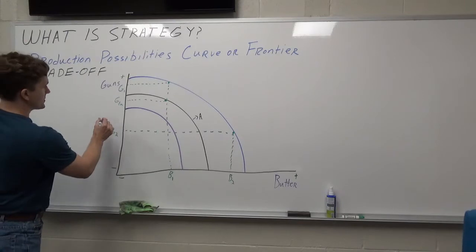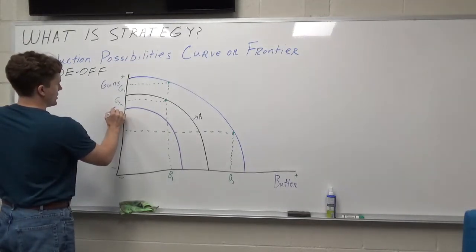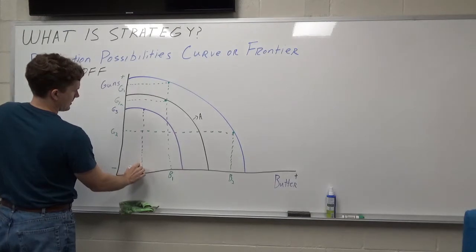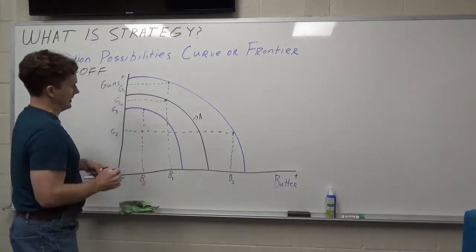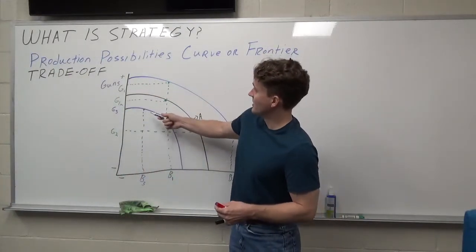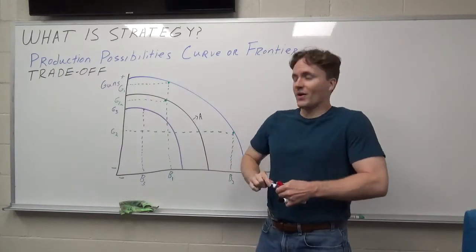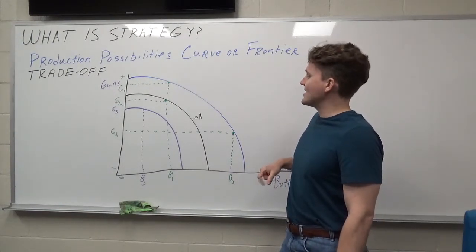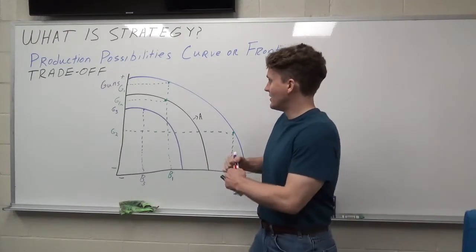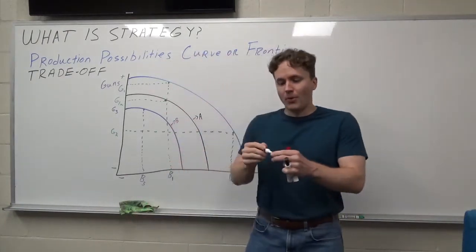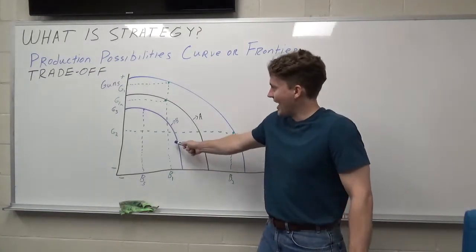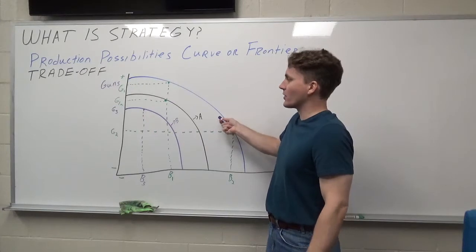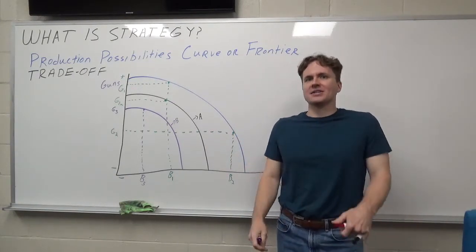For Country B — the purple one — they've got this quantity G3 and B3. They wanted to produce a fair amount of guns similar to Country A, but no matter what choices they make, they're not going to be anywhere near their production possibilities frontier, and in almost all cases they won't be able to produce as much as Country A. The whole point of operational effectiveness, especially if you're Country B, is: how do I shift my actual production possibilities frontier toward A, or move it ever closer to this hypothetical frontier? How do we totally maximize our efficiency?